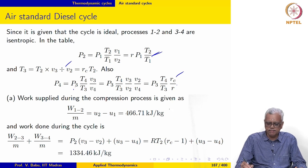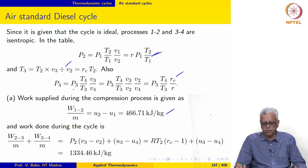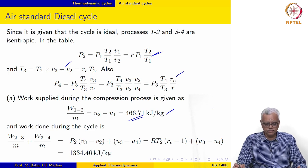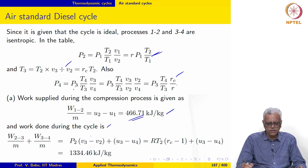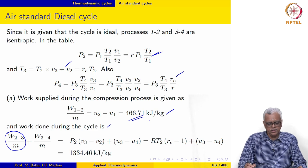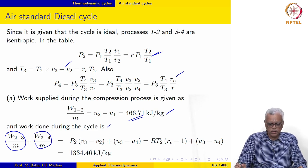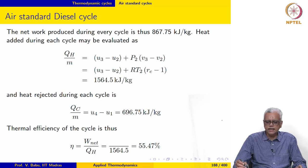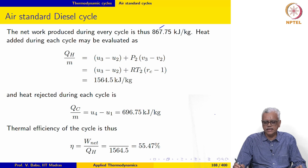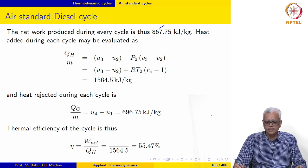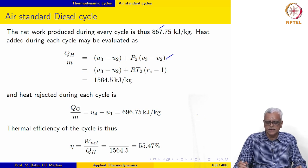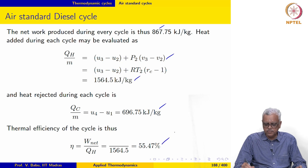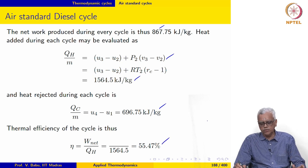Now we can plug in these numbers and get the values we are looking for. The work input during the compression stroke, U2 minus U1, may be evaluated as 466.71 kilojoules per kilogram. The work done during the cycle, which is the displacement work during the heat addition process plus the expansion work, comes out to be 1334.46. The net work produced during each cycle is 867.75. Heat added during the cycle is 1564.5 and heat rejected comes out to be this. The thermal efficiency of the cycle comes out to be 55.47 percent.